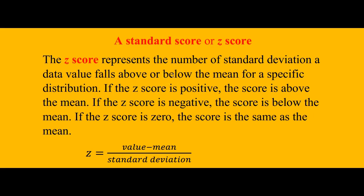Standard scores help us compare numbers and position, how well people do in a test. It represents the number of standard deviations a data value falls above or below the mean for a specific distribution. If the z-score is positive, then the score is above the mean. If the score is negative, the score is below the mean.